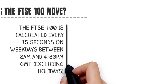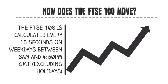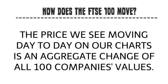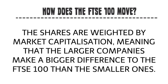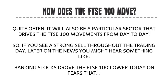The FTSE 100 is calculated every 15 seconds on weekdays between 8am and 4:30pm GMT, excluding holidays. The price we see moving day to day on our charts is an aggregate change of all 100 companies' values. The shares are weighted by market capitalization, meaning that the larger companies make a bigger difference to the FTSE 100 than the smaller ones. Quite often it will also be a particular sector that drives movements, so later on the news you might hear something like "Banking stocks drove the FTSE 100 lower today on fears that..." and whatever it may be.